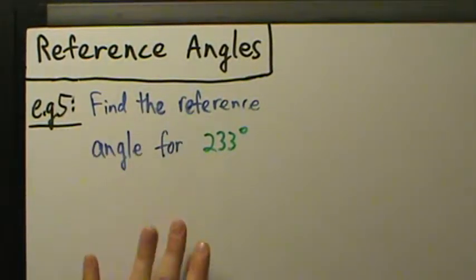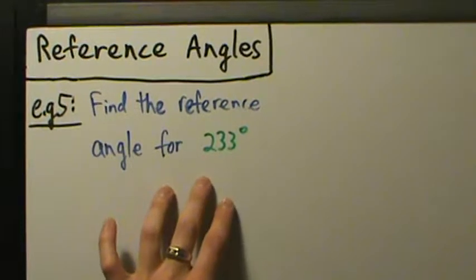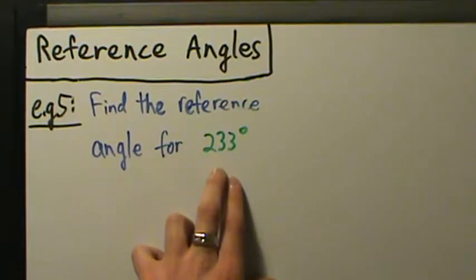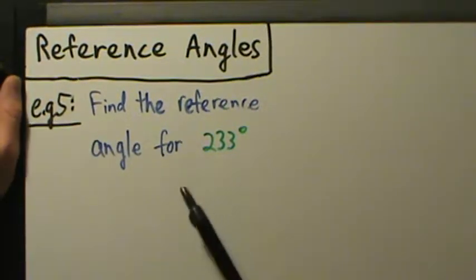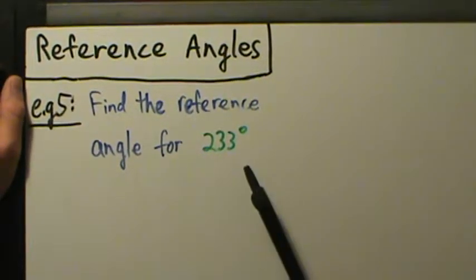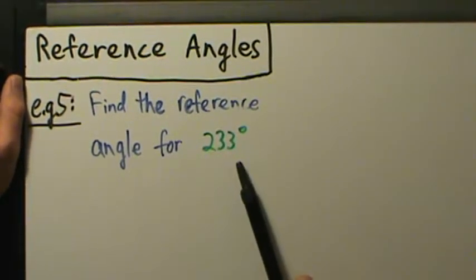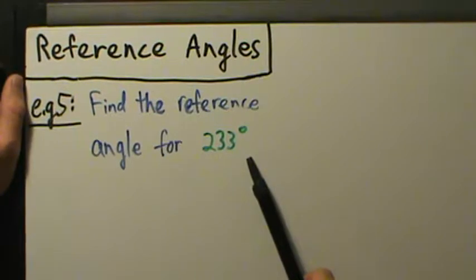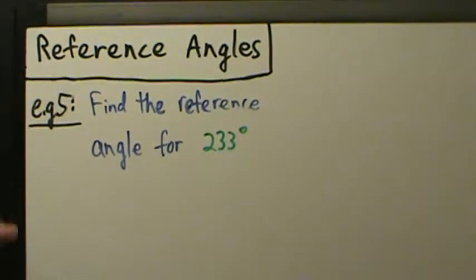This one really isn't a whole lot more complicated, but what is more complicated is that it's not a special nice angle on the unit circle. But since it's given to us in degrees, it's actually not going to be that bad. The first thing we ask ourselves is: is this between zero degrees and 360 degrees? And yes, 233 degrees is obviously positive and less than 360 degrees, so it is between zero and 360. So then what we want to do is draw it.